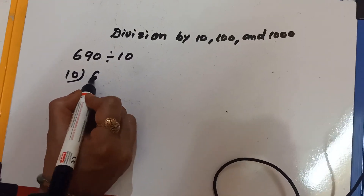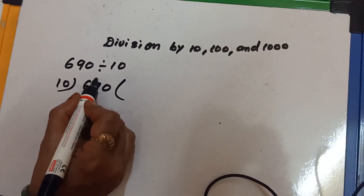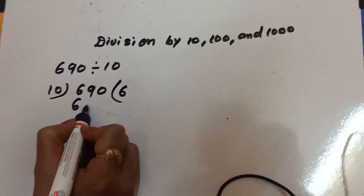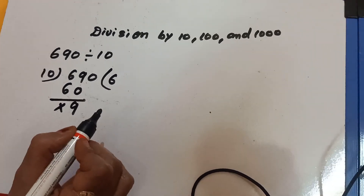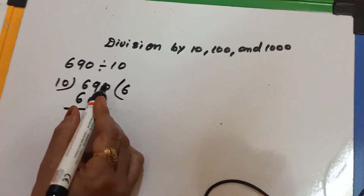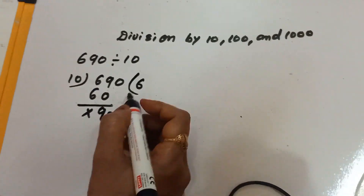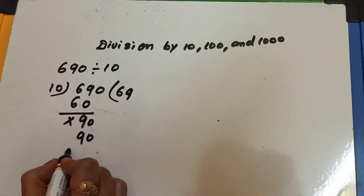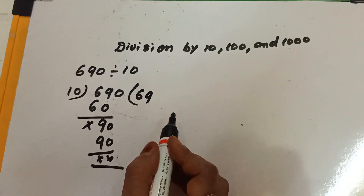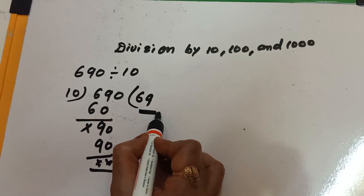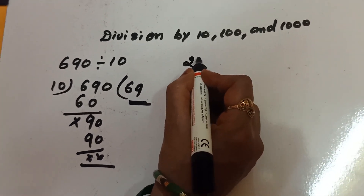Look here: 10 into 690. In the 10-times table, 6 times gives 60. Then 9 and 6 minus 6 equals 0. Bring down the 0, and 10 nines are 90. So there is no remainder, and the quotient is 69.